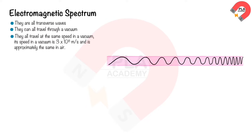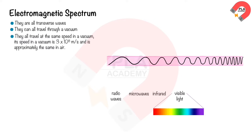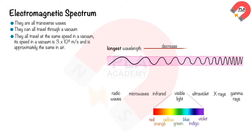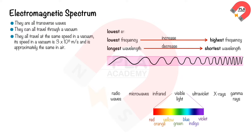The electromagnetic spectrum is arranged in order based on wavelength or frequency. The main groupings are: radio waves, microwaves, infrared, visible light (red, orange, yellow, green, blue, indigo, violet), ultraviolet, X-rays, and gamma rays. This order runs from longest to shortest wavelength, lowest to highest frequency, and lowest to highest energy.